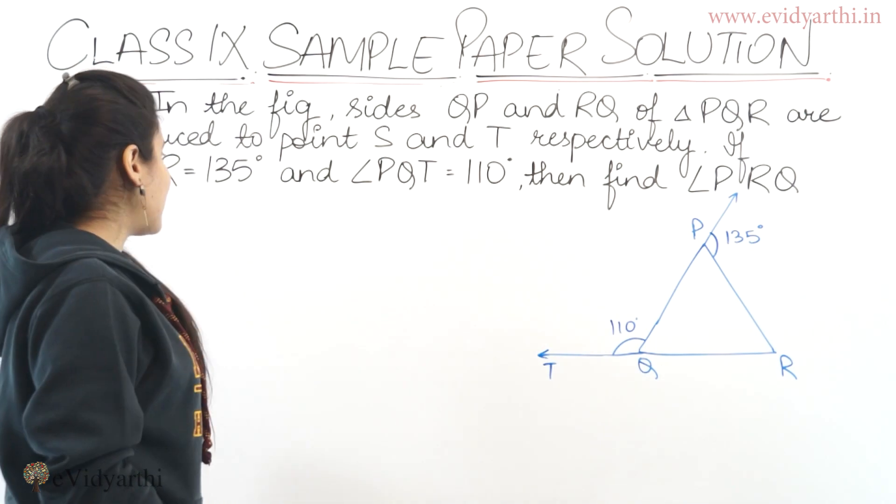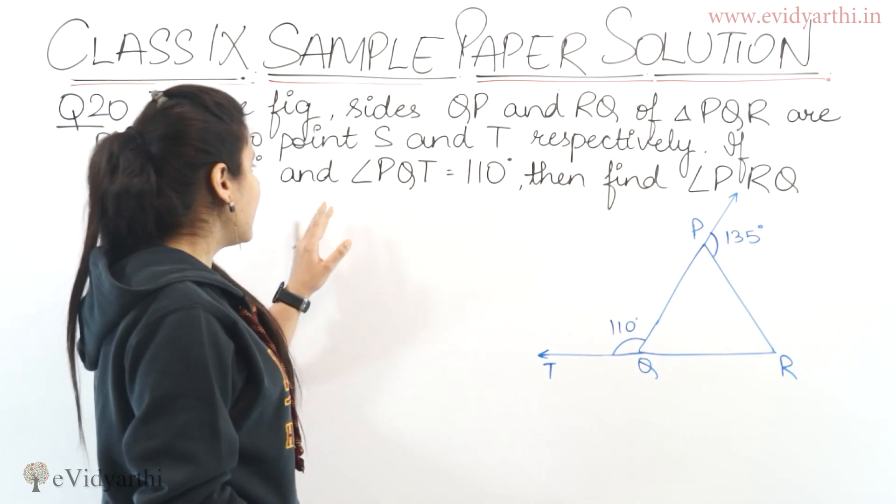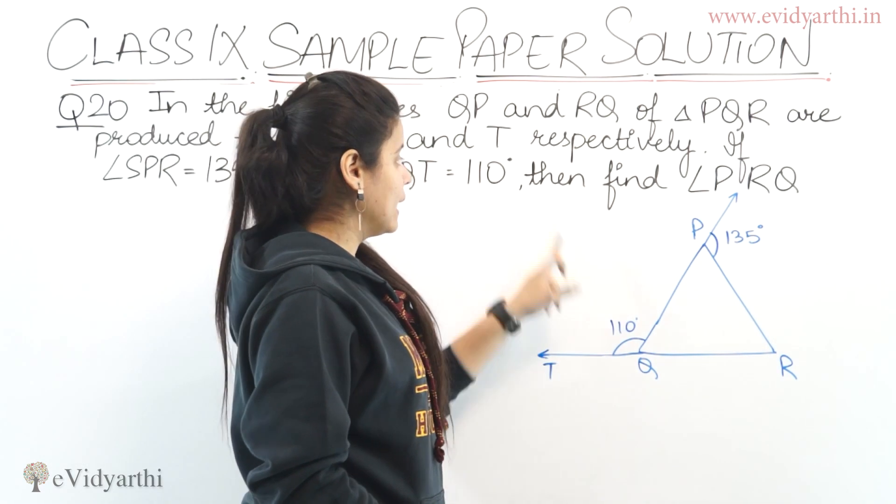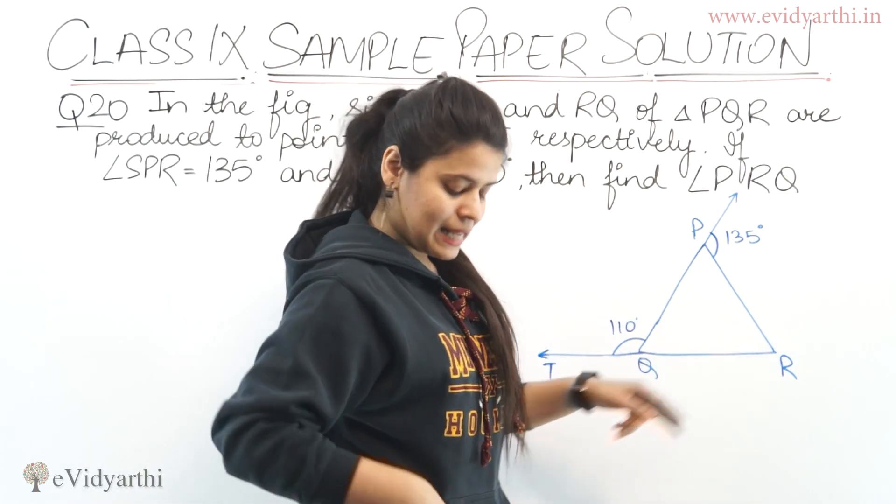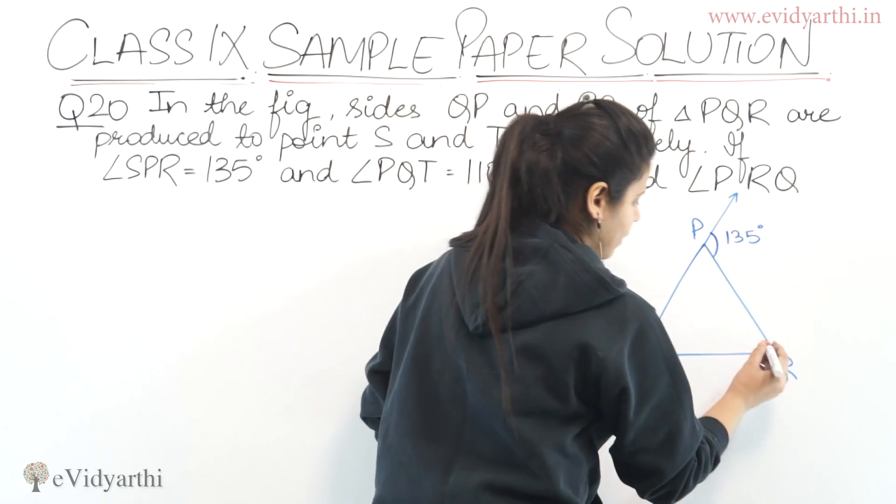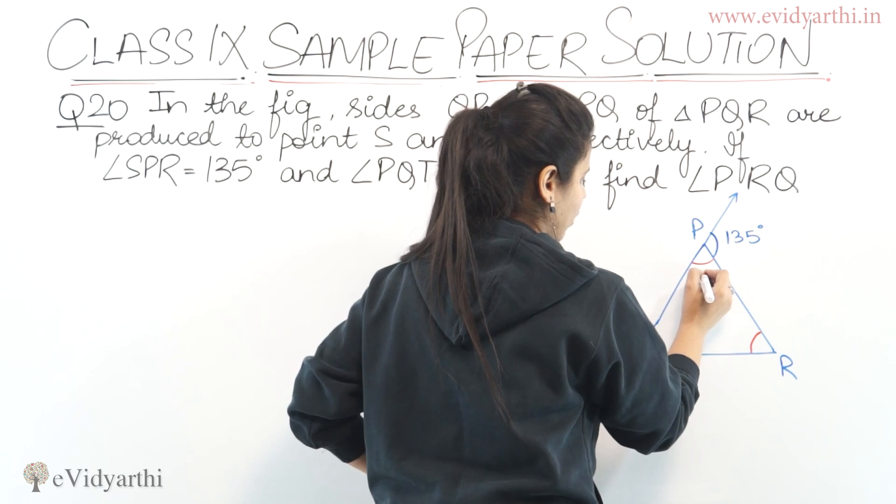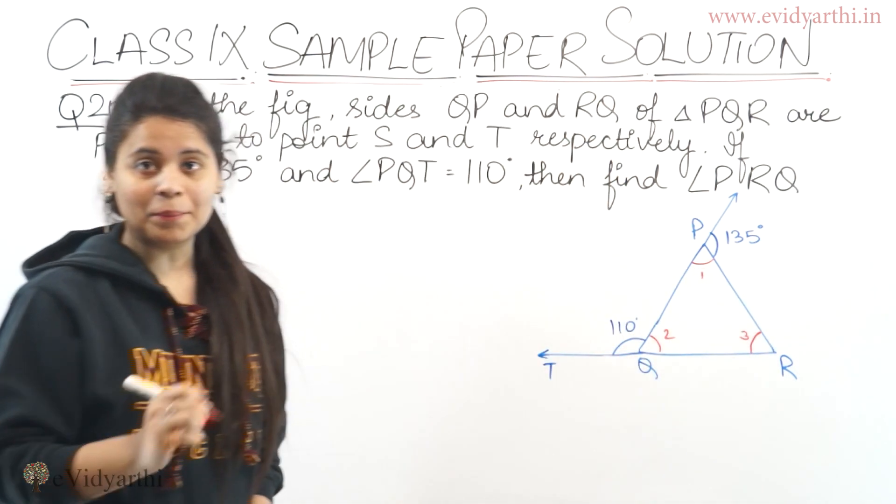If angle SPR equals 135 degrees, means this angle is 135, and angle PQT equals 110 degrees, then find angle PRQ. So you have to find angle number 3.